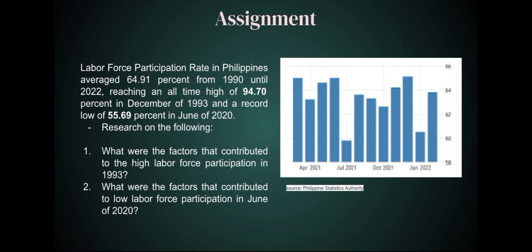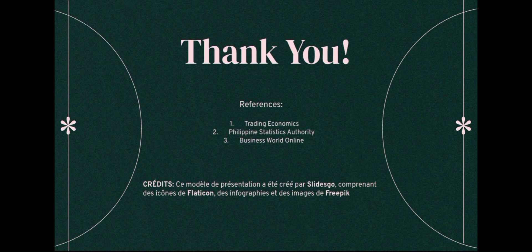I am leaving you with an assignment. In the Philippines, labor force participation averaged 64.91% from 1990 until 2022, reaching an all-time high of 94.7% in December of 1993 and a record low of 55.69% in June of 2020, as shown in the graph. The source is the Philippine Statistics Authority. Please research: what were the factors that contributed to the high labor force participation in 1993, and what were the factors that contributed to the low labor force participation in June of 2020? Thank you so much — I hope you have learned something today and I will see you on our next lesson.